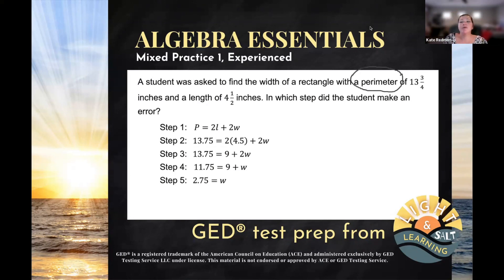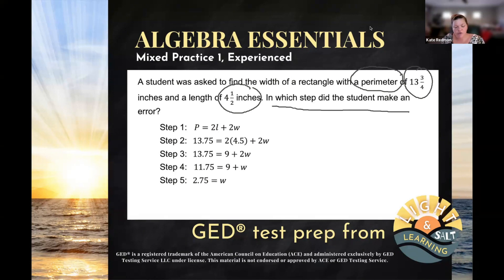We've been asked to find perimeter. We've got perimeter formulas on the GED formula sheet, so we're going to flex our formula sheet skills. Also, we have some fractions, so we are going to flex our calculator skills looking at fractions. And then the directions here say, in which step did the student make an error? There are problems like this on the GED math test where you have to find a student error solving an equation.